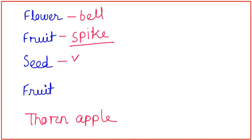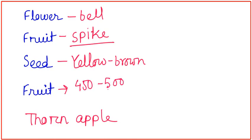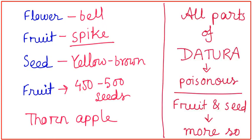Its seeds are yellowish brown and one fruit approximately contains 450 to 500 seeds. In regards of toxicity, all parts of Dhatura are poisonous but its fruit and seeds are more poisonous.